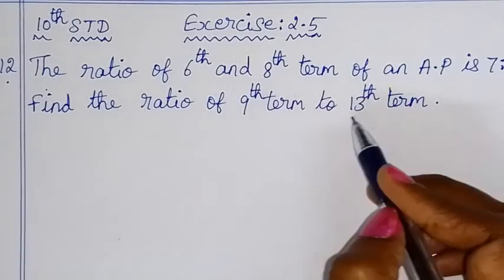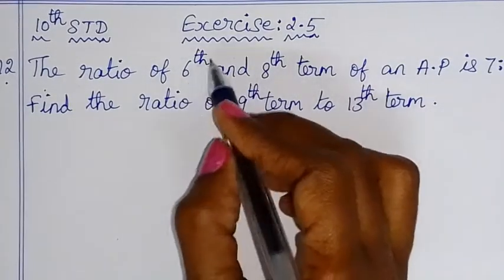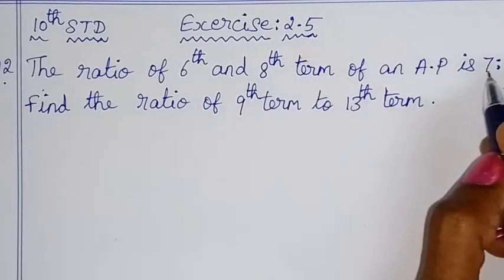So first condition given is 6th term to 8th term is 7 is to 9. We need to find the ratio of 9th term to 13th term.